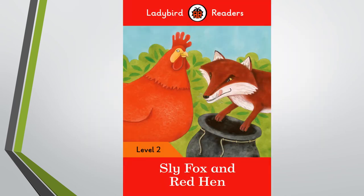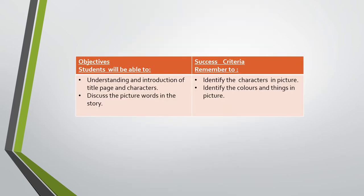In today's lesson I am going to introduce a book of English literature of Class 1, that is the reader book — Sly Fox and Red Hen. At the end of the lesson, students will be able to achieve the following objectives.